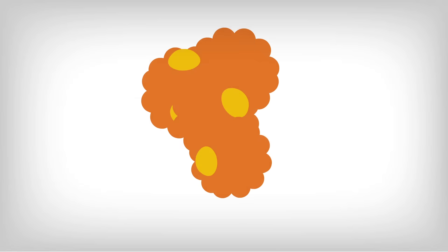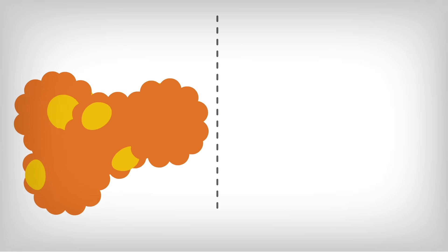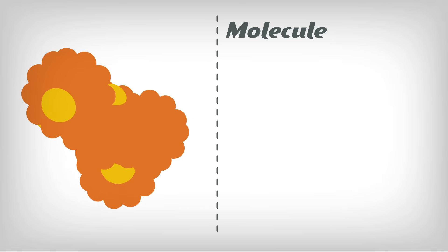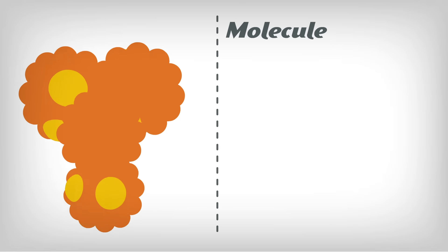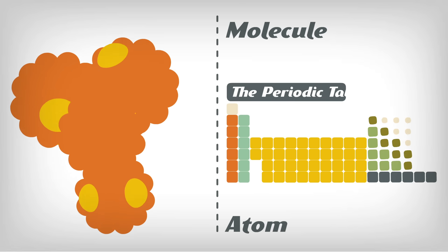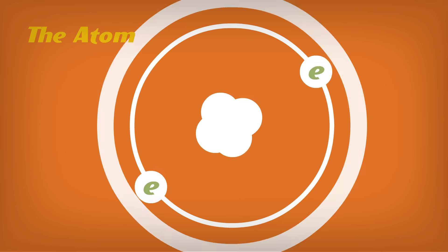Zooming in on the fragments of the cup, we see molecules made of atoms bound up together. A molecule is the smallest unit of any chemical compound. An atom is the smallest unit of any element in the periodic table. But the atom is not the smallest unit of matter.